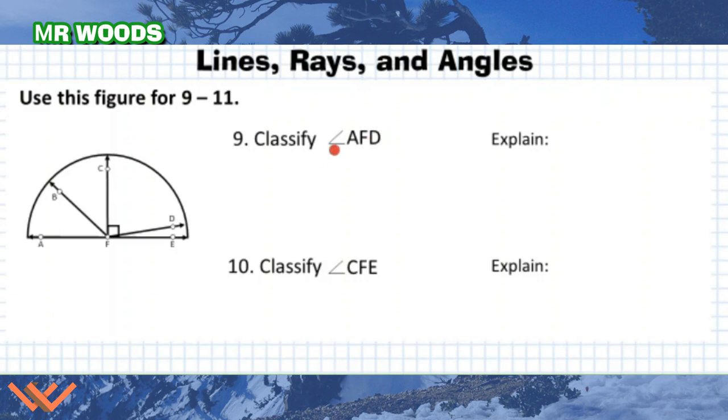For number nine, it reads classify angle AFD. What does classify mean? Let's take a look. So AFD. What type of angle does that look like? It looks like it's an obtuse. Can you explain that answer? AFD is an obtuse angle that is greater than 90 degrees. We can see that right here. AFD. It's definitely greater than 90 degrees.